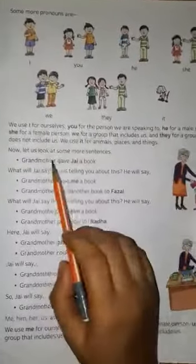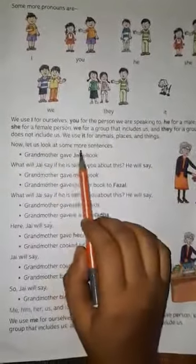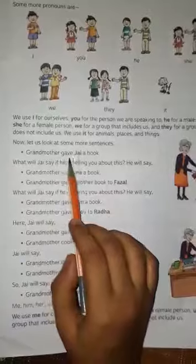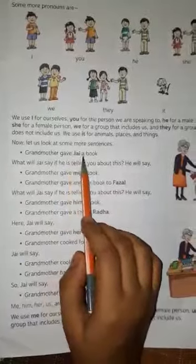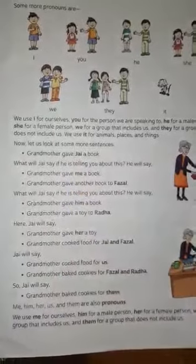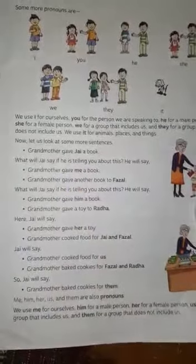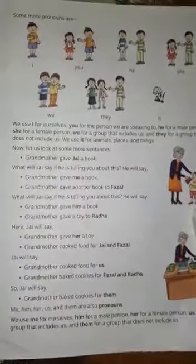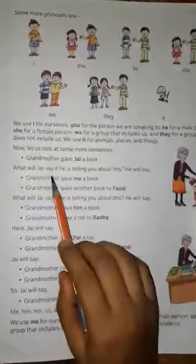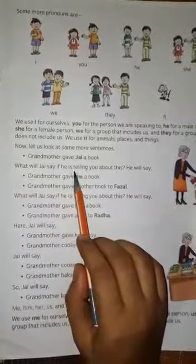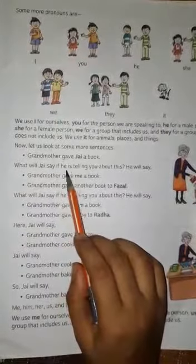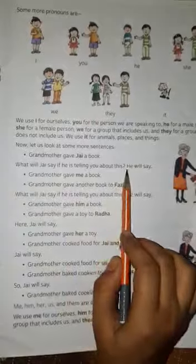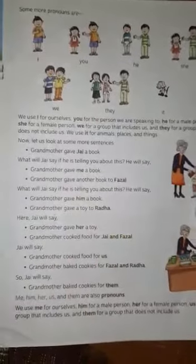Now, let us look at some more sentences. Grandfather gave Joy a book. So Grandfather gave Joy a book — Grandfather Joy ke ekti boi diya chhe. What will Joy say if he is telling about this? He will say...